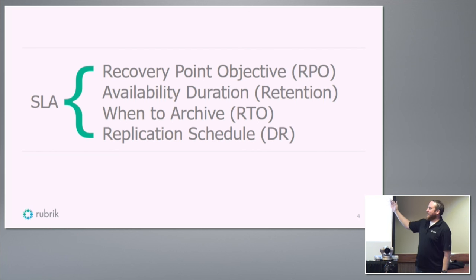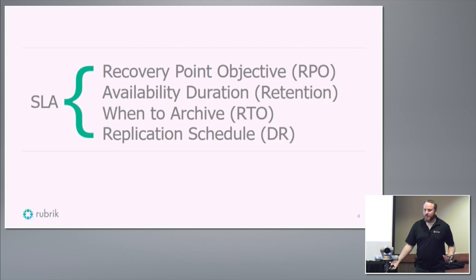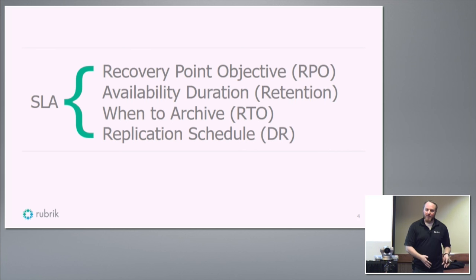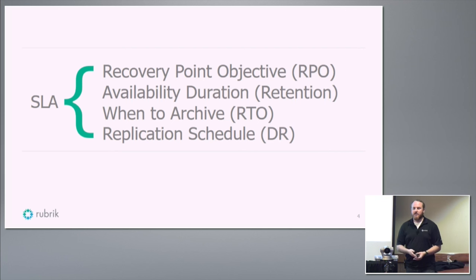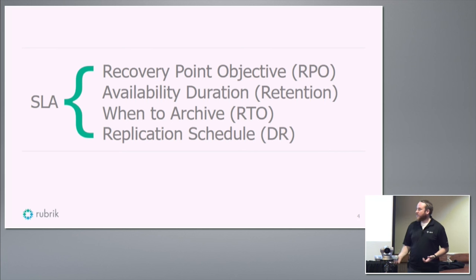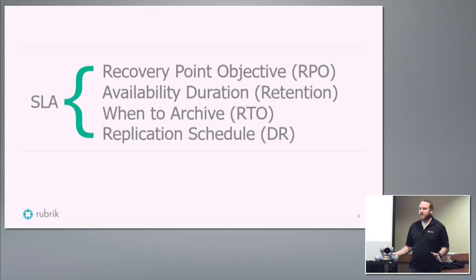Just as a quick overview in case you've never heard these terms: RPO, the recovery point objective, is the quantity of data I'm willing to lose before I become unhappy. Availability duration is essentially the retention — how long do I want to keep the data. The RTO is the recovery time objective — how long does it take from the point of failure to being back online processing transactions, which typically dictates when you archive. And then finally the replication schedule, for disaster recovery to reinforce RTOs. These four things are really all you need to support the SLAs.